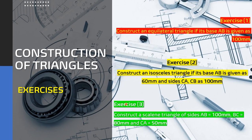We're going to conclude construction of triangles by looking at construction of a scalene triangle of size AB equals 100 millimeters, BC equals 80 millimeters, and CA 50 millimeters. So let's give this a go.